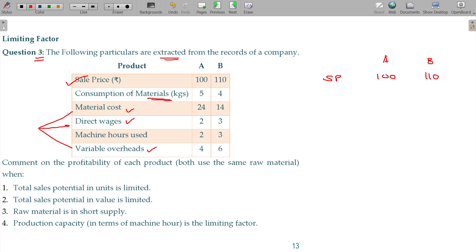These three are the costs - resource number one and resource number two. A and B manufacture using material, machines, material cost, labor cost, and variable overhead. These three will be put together, called variable cost. Comment on the profitability of each product - both use the same raw material when sales potential in units is limited.